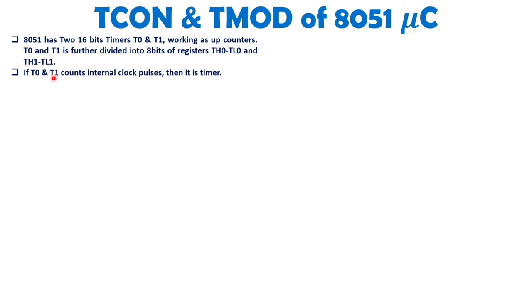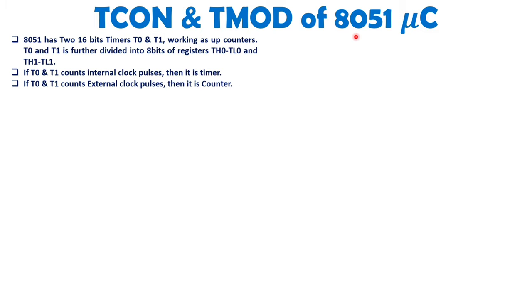T0 and T1 will count the internal clock — in that case, it is working as a timer, and internal clock pulses are provided by 8051. But when T0 and T1 count external clock pulses given on external pins T0 and T1, then it is working as a counter. Clock pulses given externally on the external pin of 8051 enable counter operation, while internal clock enables timer operation.